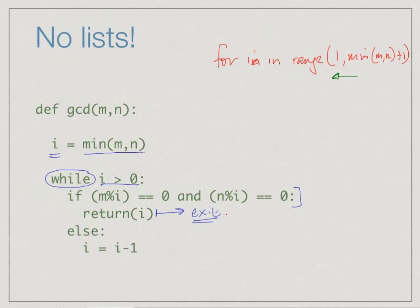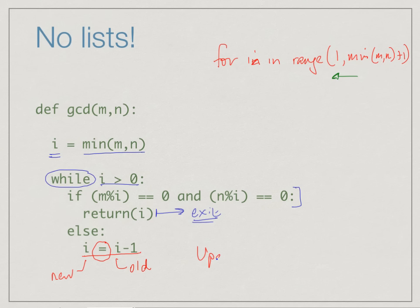If i is not a common factor, we proceed by checking the next one going backwards. This is achieved by the update i = i - 1: take the current value of i, subtract 1, and replace it. Note that mathematical equality is written as double equals (==), used in conditions, whereas a single equals in Python means assign a value to a variable. So this is the final optimization of the naive algorithm — scanning for common factors from the end to the beginning and keeping only the first factor found.